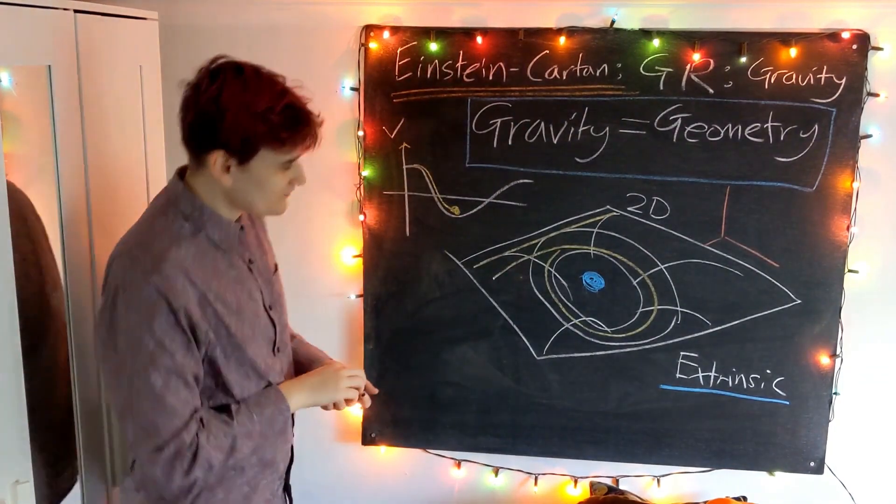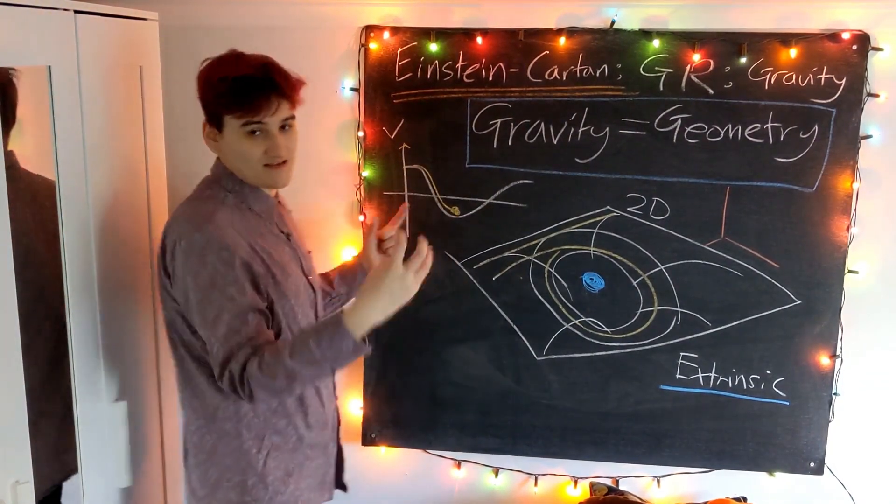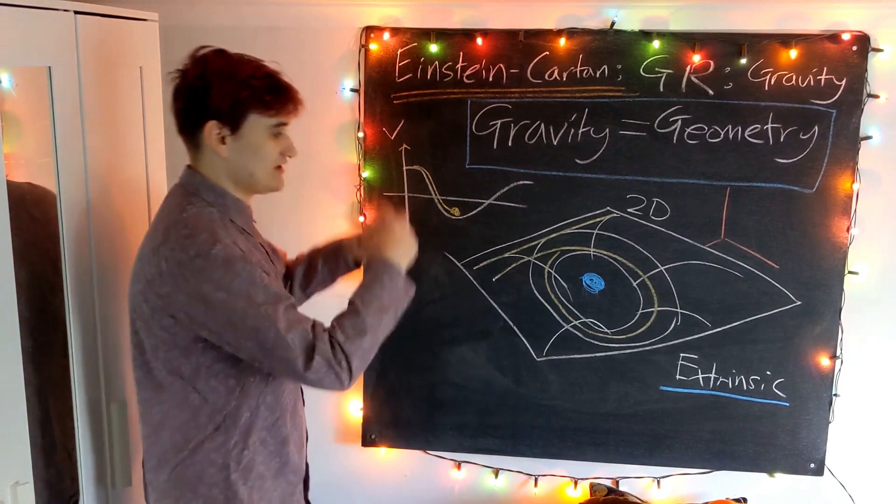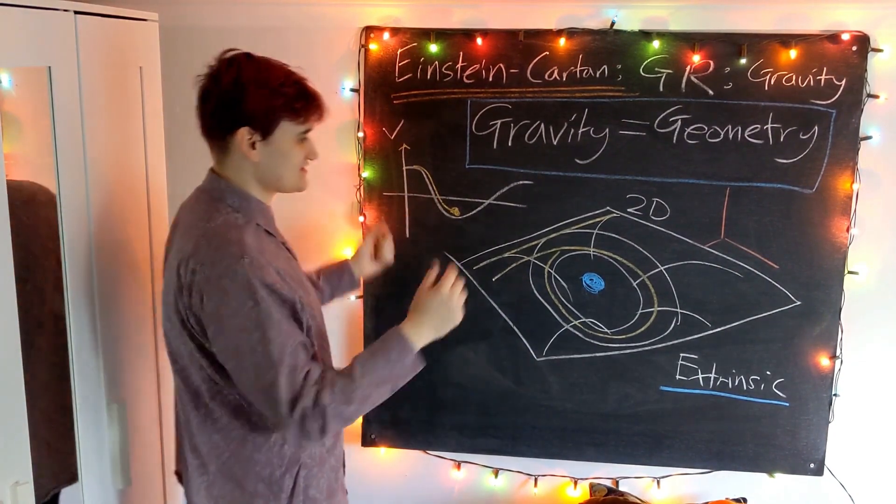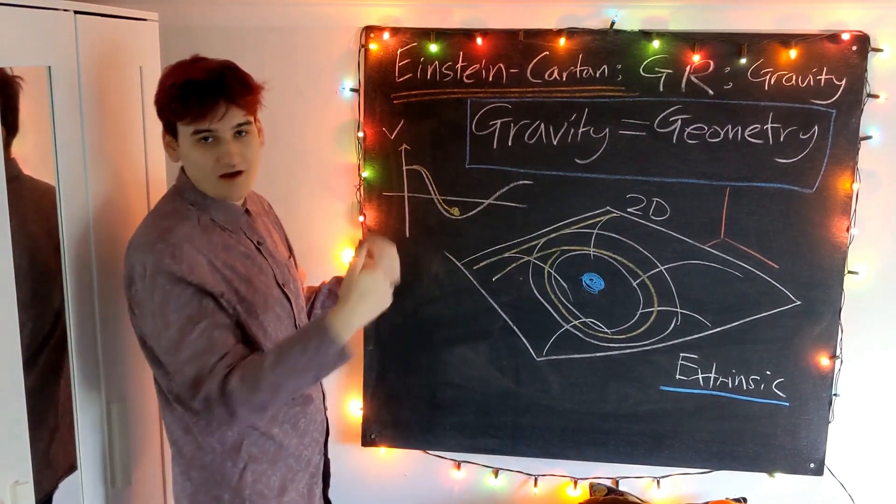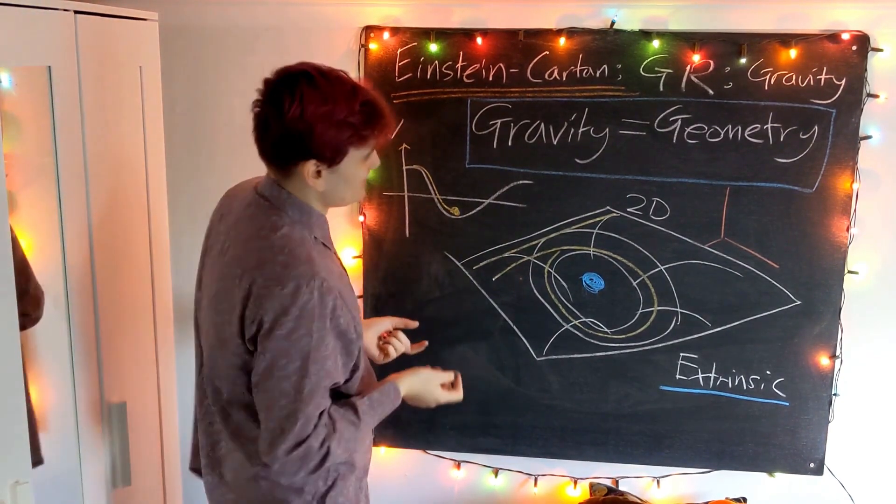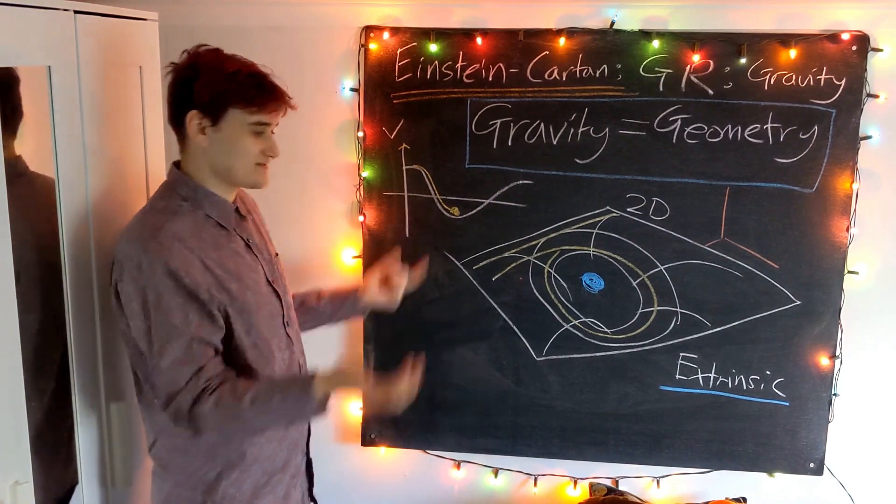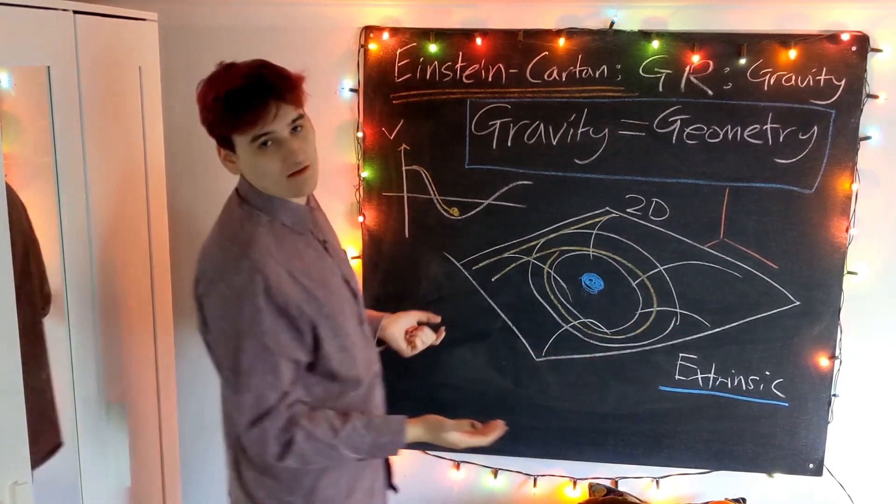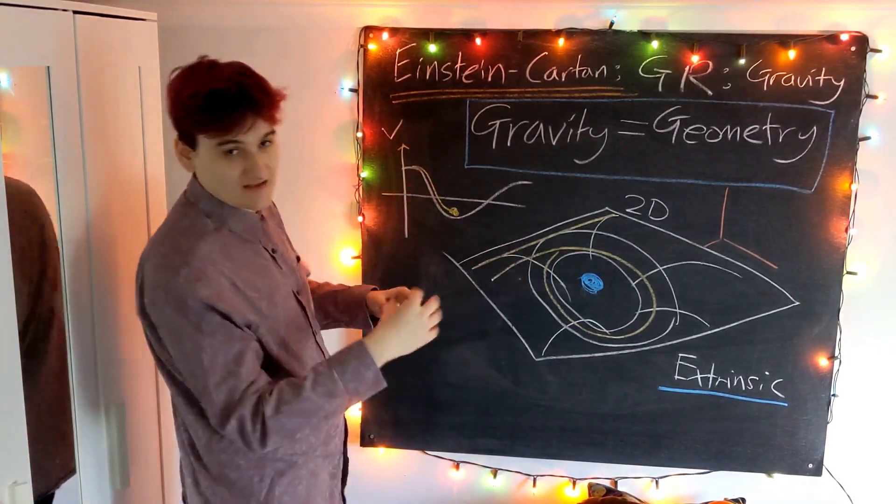We can see this curvature happening because we're looking at it in three dimensions. We can see how this sheet is bending to create a bowl shape. But this isn't the curvature we're interested in for general relativity. This is curvature which is only apparent because the space exists in some higher dimension.